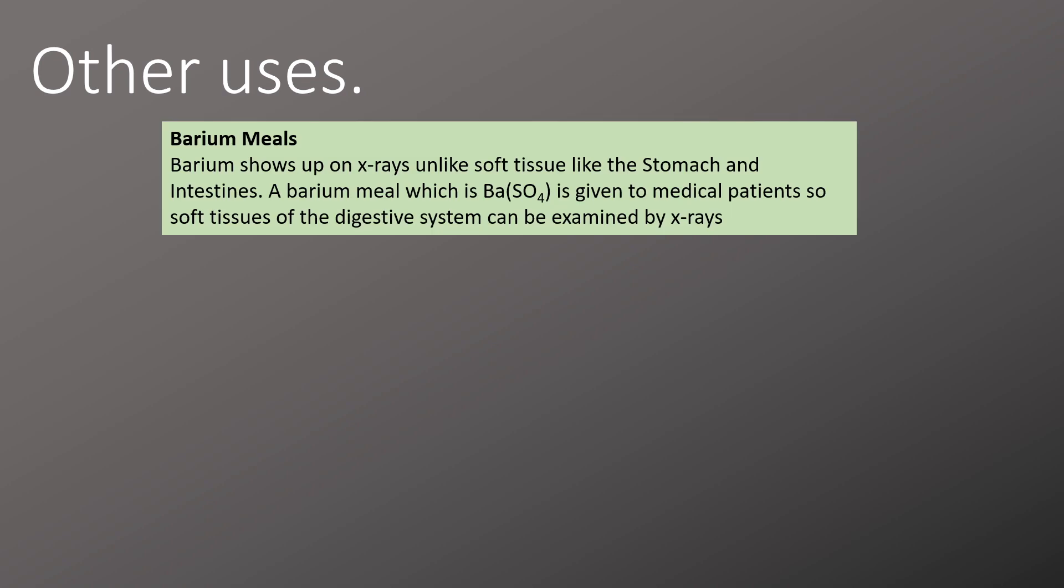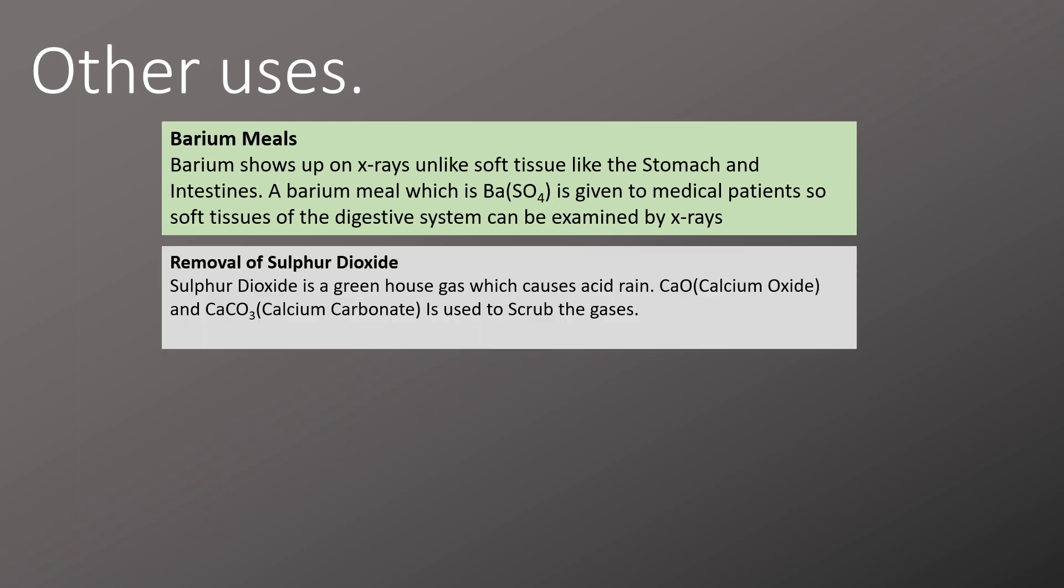There are several other examples we need to know. One of them is barium sulfate being used for barium meals, which allow us to x-ray soft tissue areas such as the stomach and intestines. Sulfur dioxide is also removed with the reaction of calcium carbonates, so calcium carbonates and calcium oxides are used to remove sulfur dioxide from industrial pollution such as that from factories.